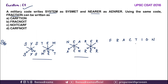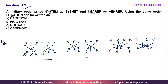We are following the same step. F, A, R — similarly T goes here and N will come here. So the code we have got is C, A, R, F, N, O, I, T — CARFNOIT. So Option D is the right answer.